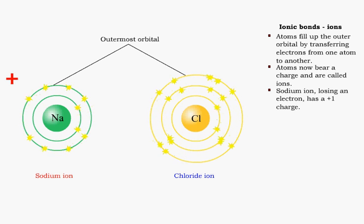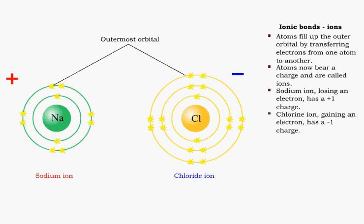each original atom has changed its charge and is now called an ion. The sodium ion, having lost an electron, now has a positive one charge. The chloride ion, having gained an electron, now has a negative one charge.